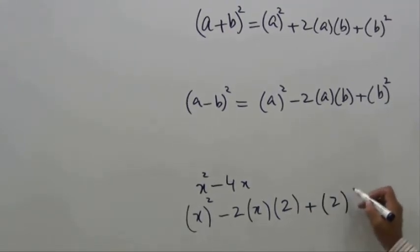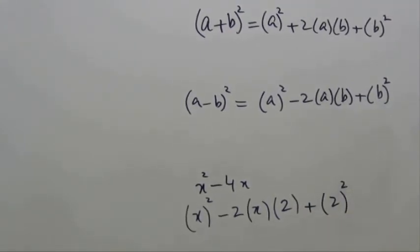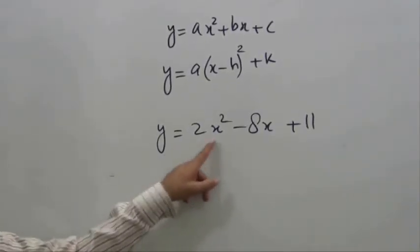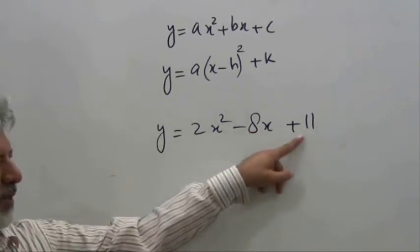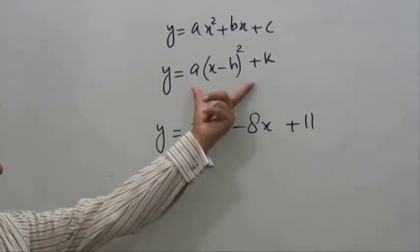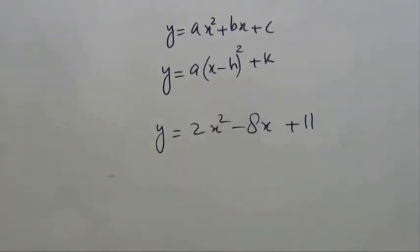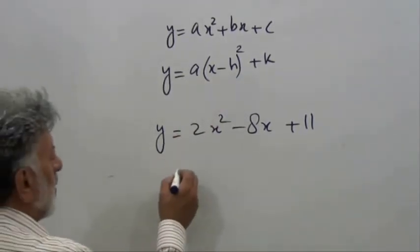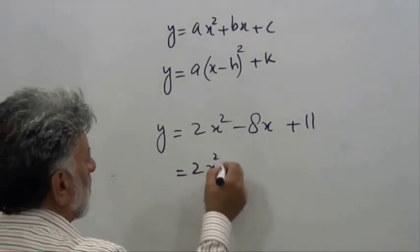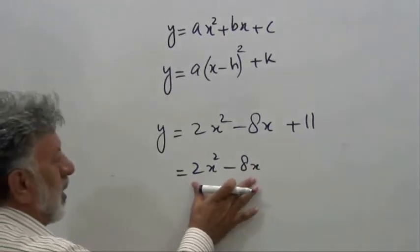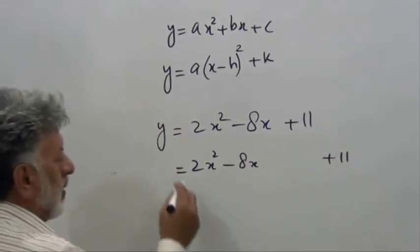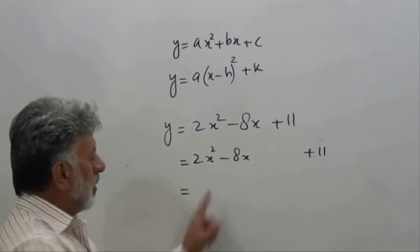Now we have an expression y equals 2x squared minus 8x plus 11, and we want to change its form. The first step is that we take the two terms separately and keep the constant away from these two terms. Whatever is the coefficient of x squared, which is two in this case, we take that common.